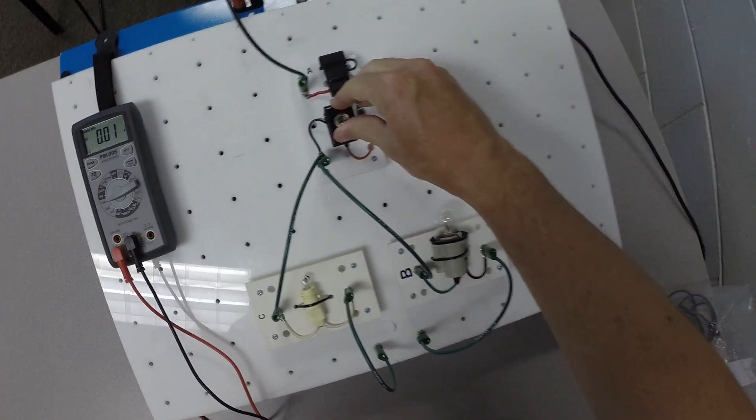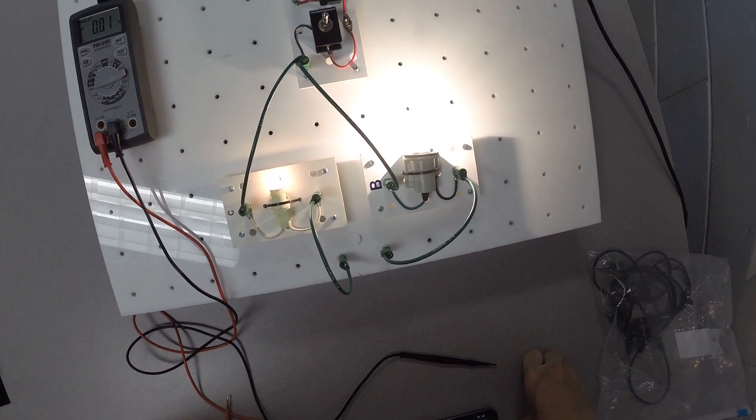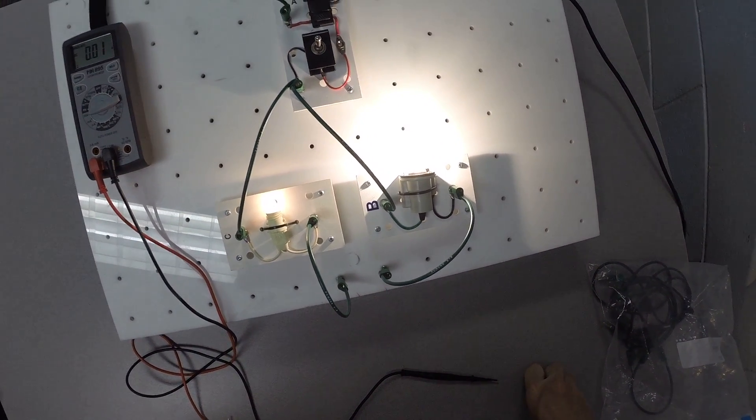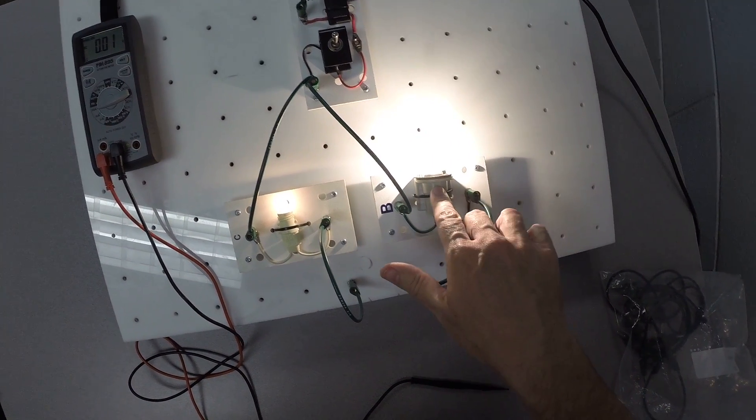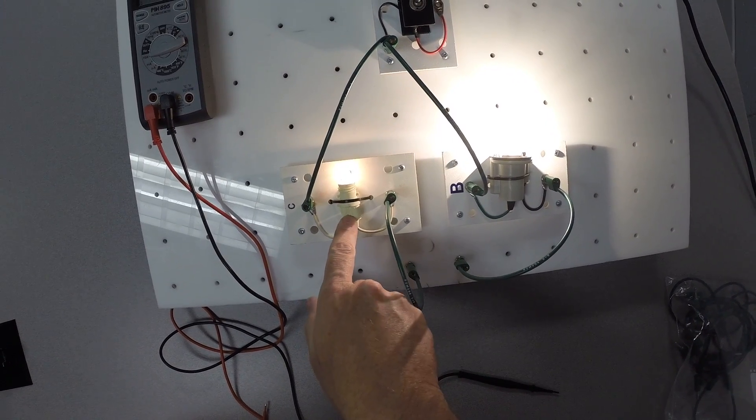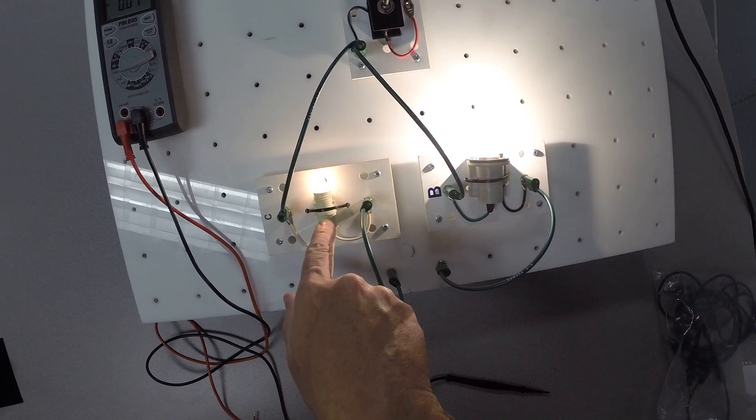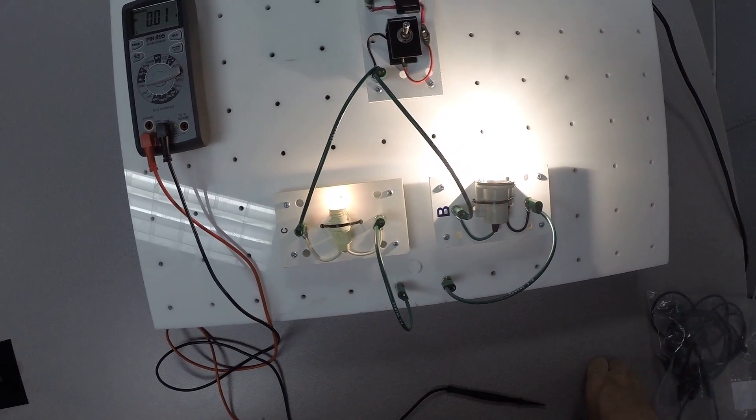Now let's turn the circuit on, and you can see the bulbs are definitely different. One's a lot brighter than the other one. Generally speaking, this one over here, because it's brighter, is probably going to be flowing a lot more current than this one over here that is more dim. This one would have less resistance than this one would have if we were to measure with an ohmmeter.